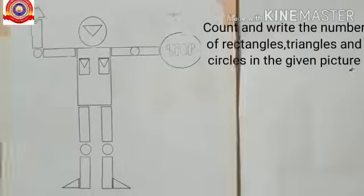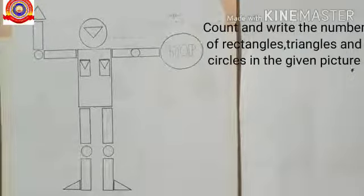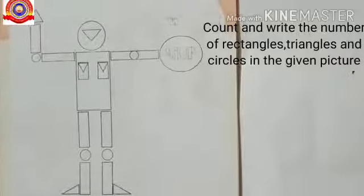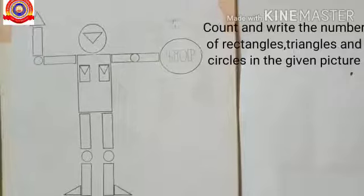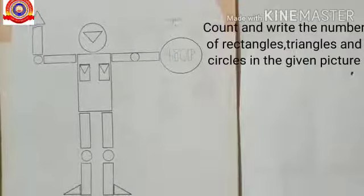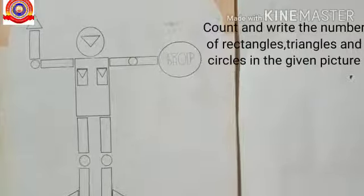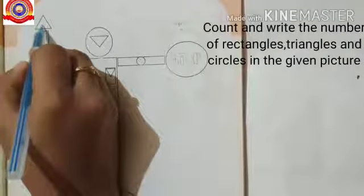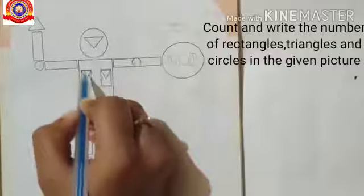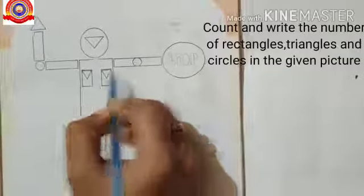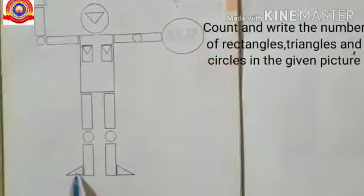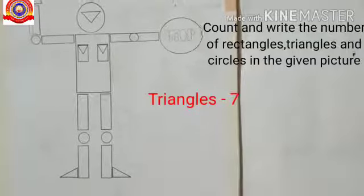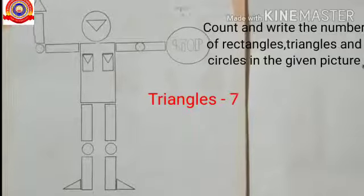Next activity: count and write the number of rectangles, triangles, and circles in the given picture. Children, in this picture, how many triangles are there? Yes, one, two, three, four, five, six, seven. Seven triangles.